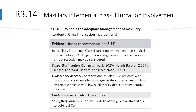The next guideline relates to the management of maxillary interdental class 2 furcation involvement. The authors state that non-surgical instrumentation, open flap debridement, periodontal regeneration, root separation, or root resection may be considered. The committee gave this a grade of O — an open recommendation — given it is supported by only observational studies with low quality of evidence for non-regenerative approaches, and two systematic reviews with low quality of evidence for regenerative treatment. It remains unclear which treatment modality is superior and how predictable each one is.